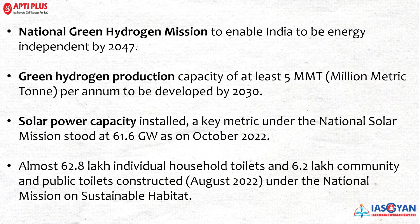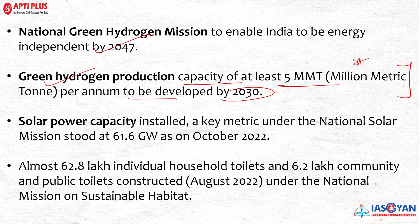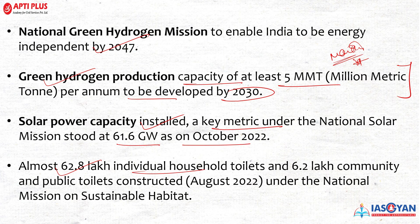The National Green Hydrogen Mission aims to make India energy independent by 2047, with a green hydrogen production capacity of at least 5 million metric tons per annum to be developed by 2030 — targets that are very important for mains examination. Solar power capacity installed under the National Solar Mission stood at 61.6 gigawatts as of October 2022. About 62.8 lakh individual household toilets and 6.2 lakh community/public toilets were constructed as of August 2022 under the National Mission for Sustainable Habitat — a useful example for GS Paper 4 case studies.